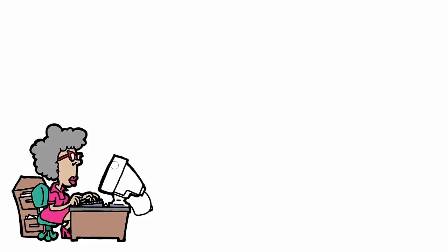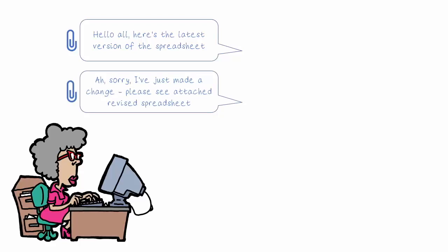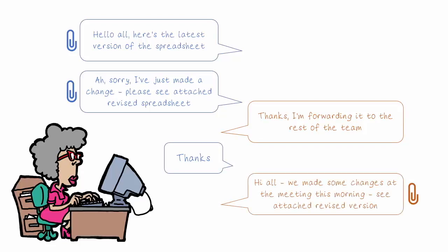Let's think about how many emails we send just discussing files. Imagine I send an email to everybody with a spreadsheet attached — very common practice. Half an hour later I realise it was the wrong version, so I send another email with the revised spreadsheet. Then somebody forwards it to the rest of the team, I reply to thank them, and they reply with further changes attached. It's not even a complicated conversation, yet we've got different attachments floating around and quite a bit of exchange going on around a simple document.